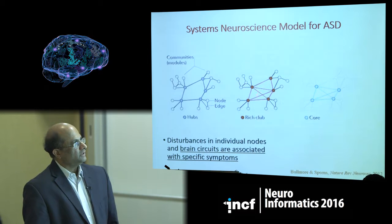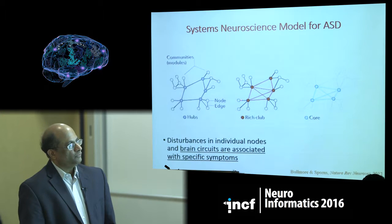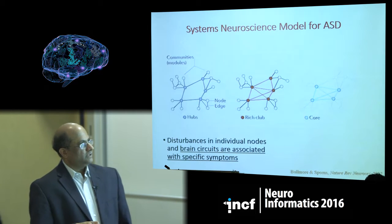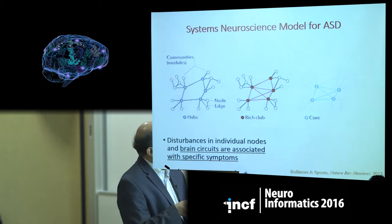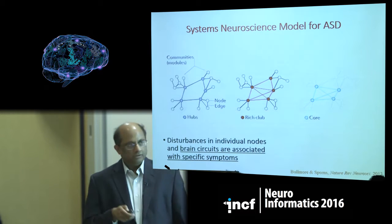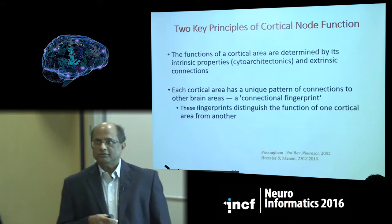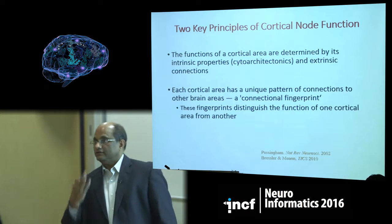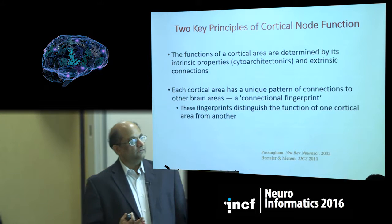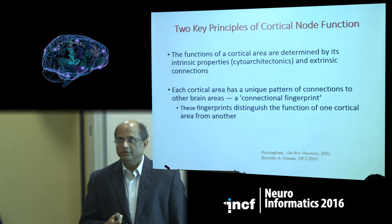One notion is that you have core nodes or rich clubs linking various modules, and dysfunction in one of these could produce a wide-ranging set of cognitive and affective deficits, as opposed to a peripheral node that might influence only a constrained set of nodes. Going back to the general idea of the cortical fingerprint: if you have a dysfunctional node sitting in a core hub of the brain, it's going to have a major influence on cognitive, social, and affective function, whereas a node in the periphery may not.